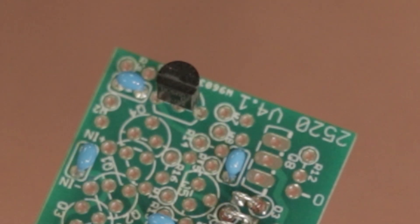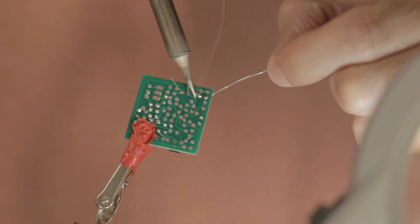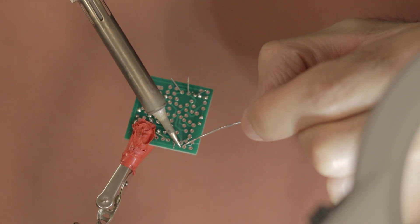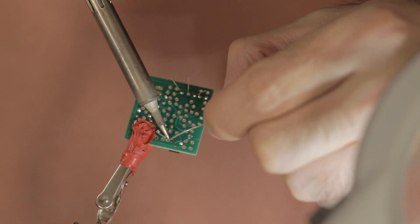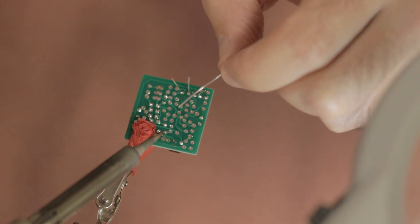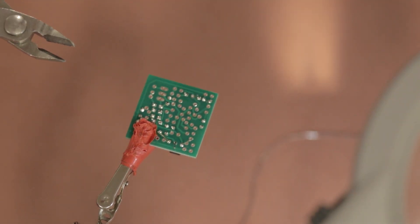So make sure that you get these orientated correctly. Once you've got those in place, you can solder the legs. What I tend to do to avoid overheating the transistors is solder one leg on one transistor and then move to another transistor and solder a leg on that one. Then once they're soldered in place, you can snip the legs.